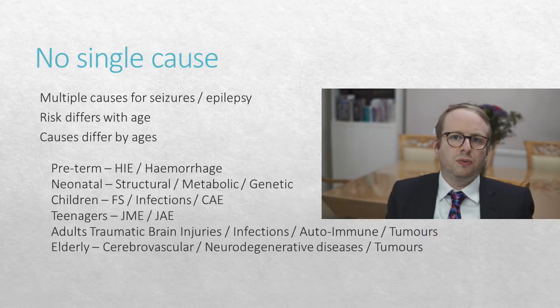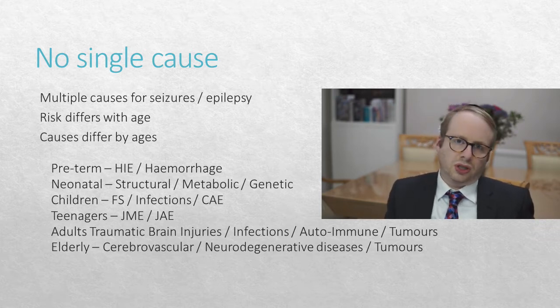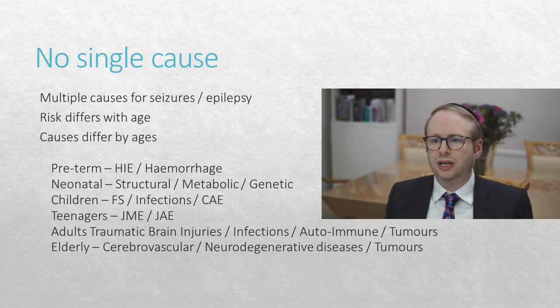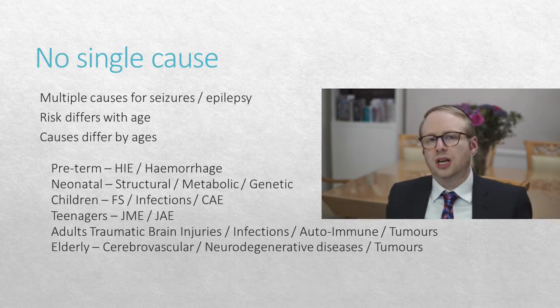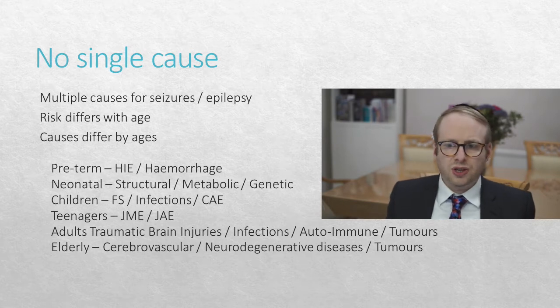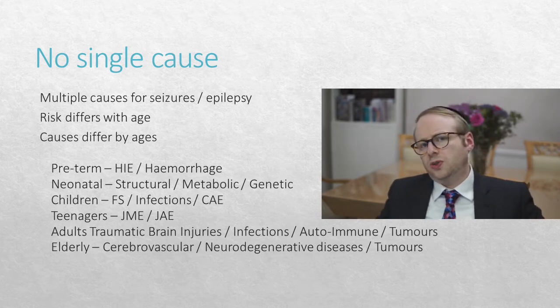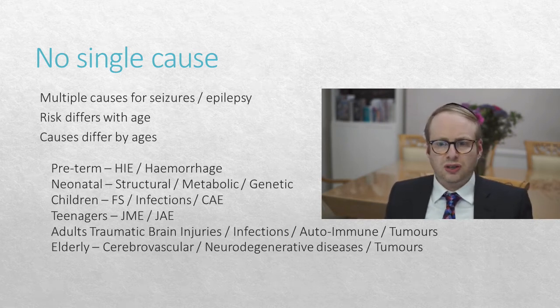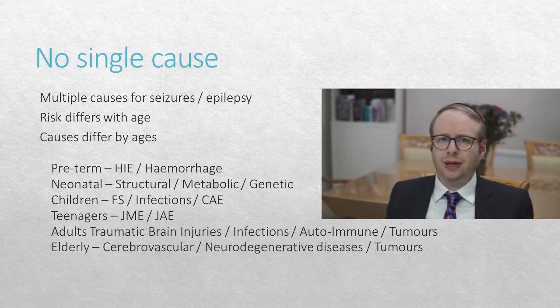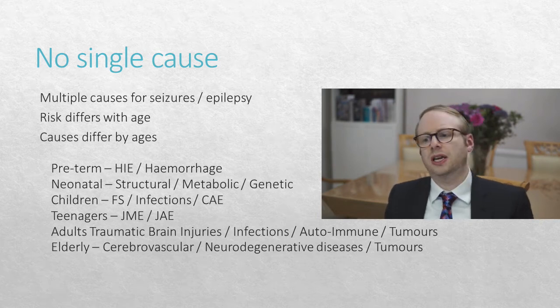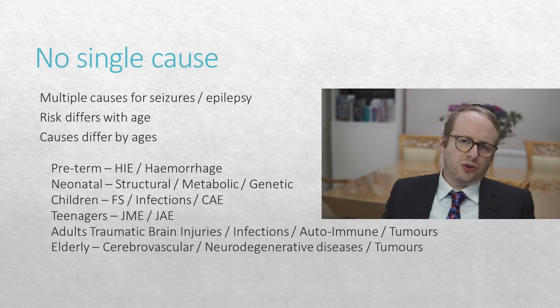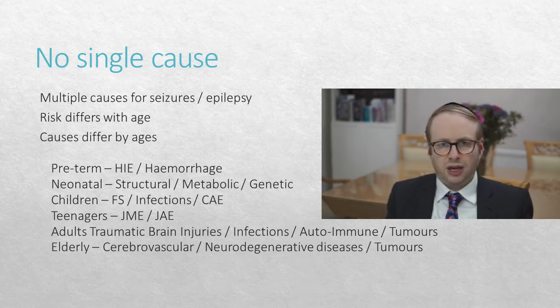Preterm babies will have different causes to elderly people. Preterm babies may have issues like hypoxic ischemic encephalopathies, hemorrhages that may predispose to seizures. In the neonatal period, some of these may be genetic benign, but they may also be structural, metabolic, or have other genetic causes. In the childhood years, we've already talked about febrile seizures — there are infections, childhood absence epilepsies. In the teenage years, we need to think about juvenile myoclonic epilepsies and juvenile absence epilepsies. As we get more into the adult years, we lead more adventurous lives — there are traumatic brain injuries, infections, autoimmune problems, tumours. And in the elderly populations, the most common causes are cerebrovascular diseases, neurodegenerative states, and also tumours. So there are lots of different potential causes, manifesting at different ages, in different ways.